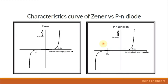Let's look at the characteristics. These two curves look similar — one is for the xenon diode and one for the normal PN junction diode. In the forward bias condition, that is the first quadrant of both graphs, the curve is almost the same, meaning the xenon diode acts like a normal diode in forward bias. The key difference is in reverse bias. For a PN junction diode, it doesn't allow current to flow until a very high breakdown voltage — in this case, 50 volts.